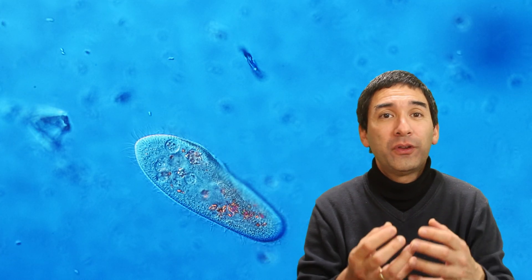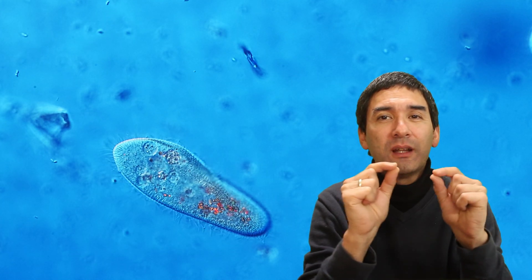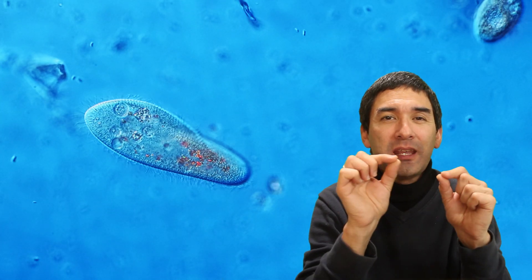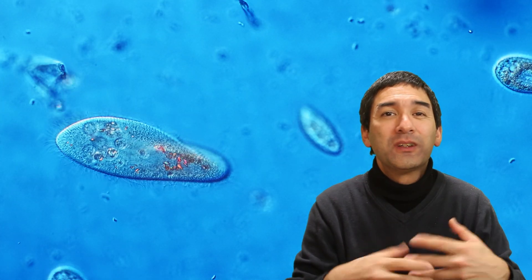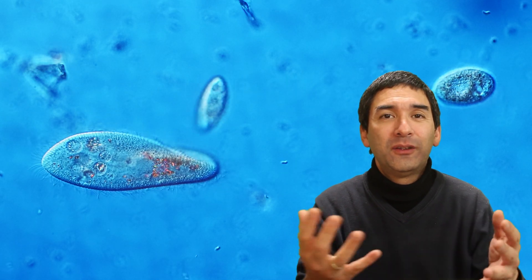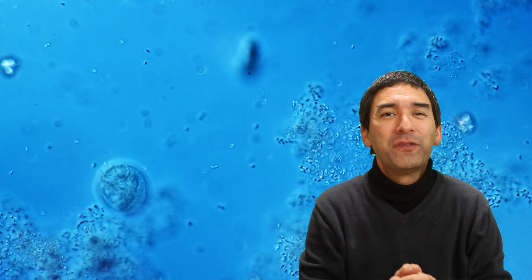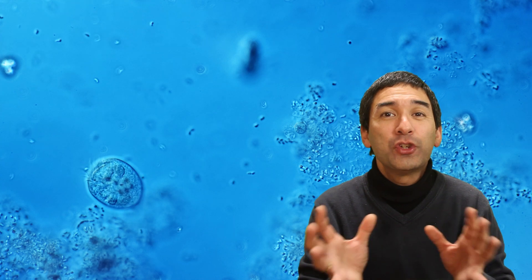They're known for their tiny hair-like structures that help them move around, and those little hairs that you find on the surface of these cells, these are called cilia, and they're not only for movement, but also very important for catching food for them.